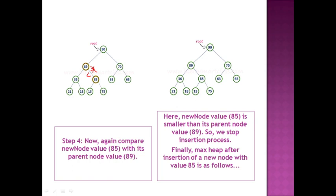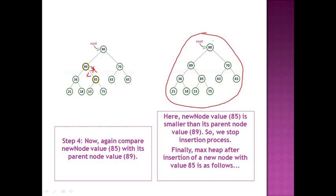Now we compare 85 with its parent 89. Since 89 is greater than 85, the max heap condition is satisfied — no need to perform any swap. We stop here. If the element were 95 instead of 85, we would need to perform another swap since 89 would be lesser than 95.